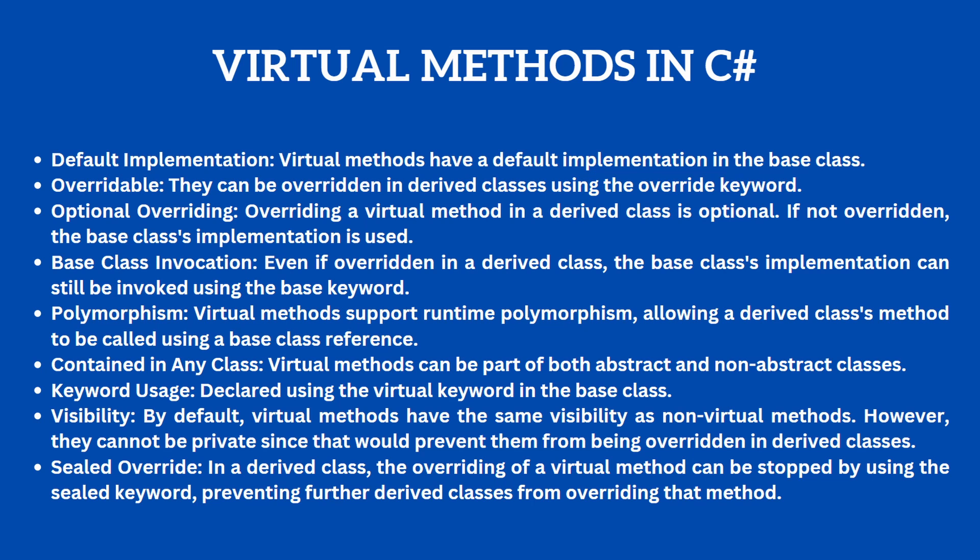Let's start with the virtual method. Virtual methods have a default implementation in the base class. They can be overridden in derived classes using the override keyword. Overriding a virtual method in a derived class is optional — if not overridden, the base class implementation is used. Even if the virtual method is overridden in a derived class, the base class implementation can still be invoked using the base keyword. Virtual methods can be part of both abstract and non-abstract classes.